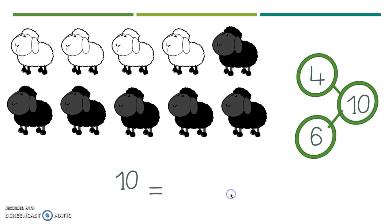Yeah, ten was equal to what? What two parts did I add together to make ten? Good! I did four white sheep plus six black sheep. Perfecto! So I could say, how did I make ten? And you could tell me, well, ten was equal to four plus six. That's how I made ten.